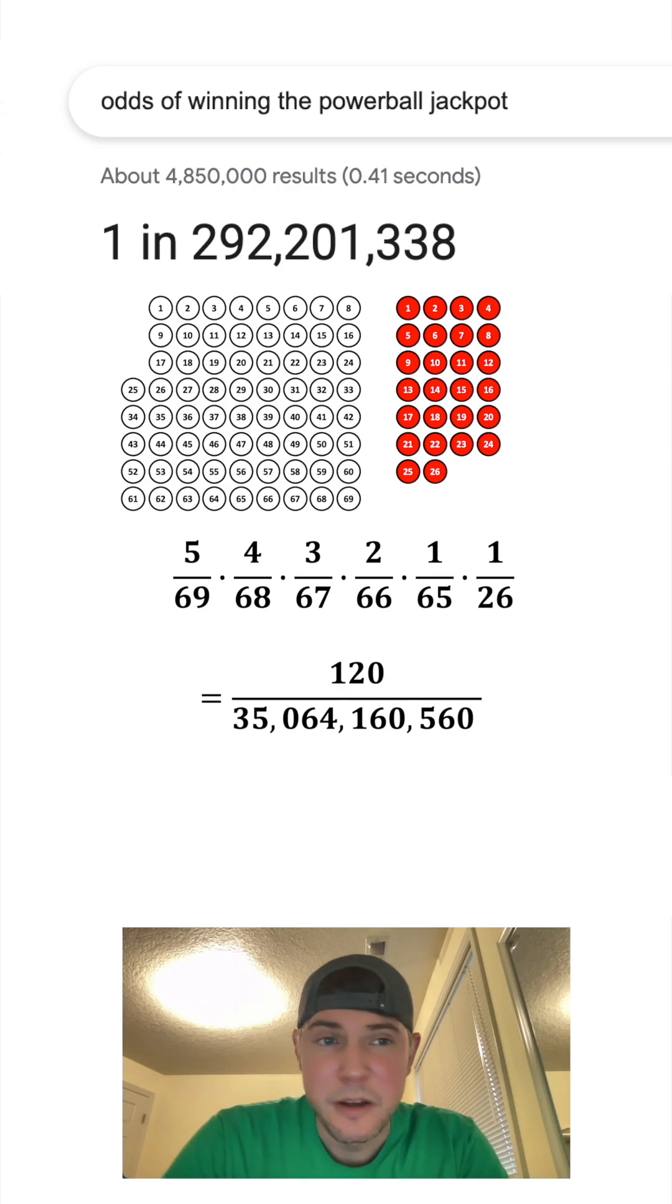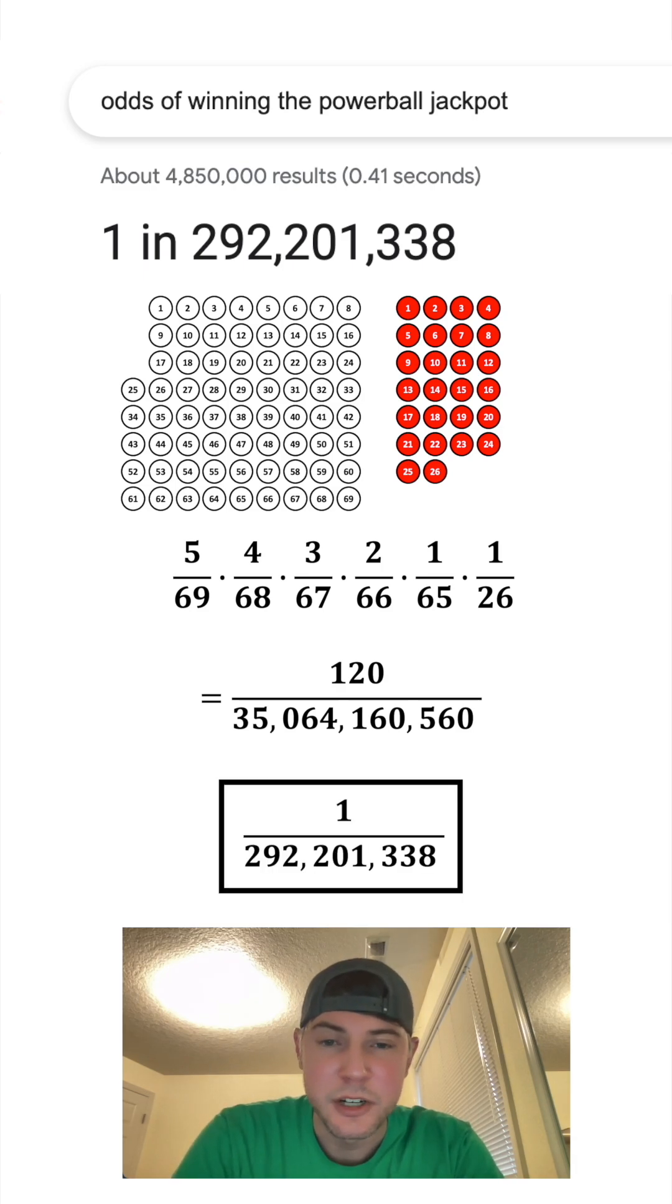And this fraction can be simplified. Both the top and bottom are divisible by 120. So we end up with 1 over 292,201,338. And this is how you calculate that number. How exciting.